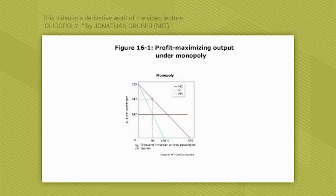The marginal revenue curve intersects the marginal cost curve at the quantity of $96,000. You then go up to the demand curve to read off the price. Remember, for a monopolist, you've got to still respect the demand curve. You go up to the demand curve to read off the price, that's $243.